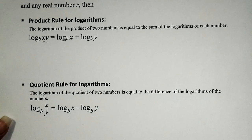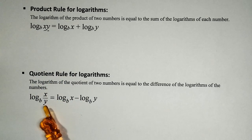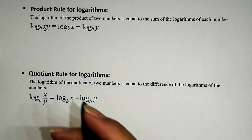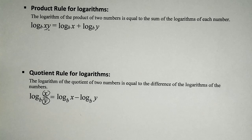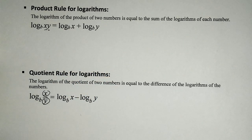The quotient rule for logarithms says: if you're taking the logarithm of a quotient, you can also expand it — as a subtraction problem. We take the logarithm of the numerator and subtract from it the logarithm of the denominator. So the moral is: if the argument is a product, expand it to a sum; if the argument is a quotient, expand it to a subtraction problem.